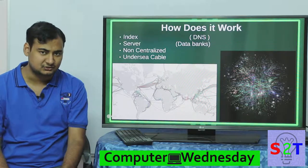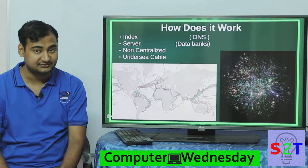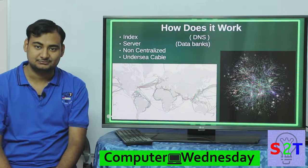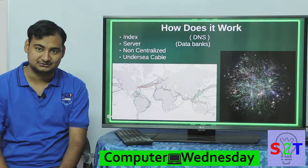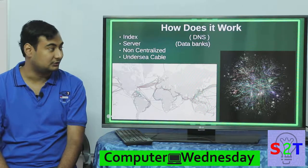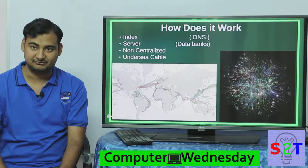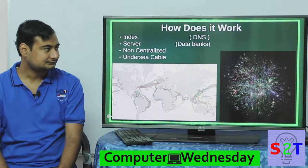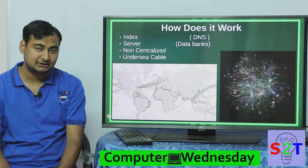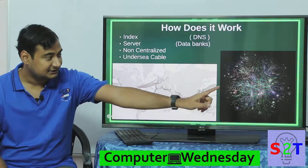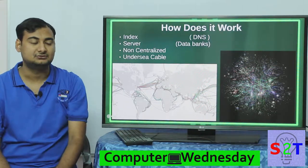After that we have the second layer, which is the server. Servers can be thought of as a data bank — they store all the data. That's why the internet doesn't go down if the person you're talking to stops their computer, because email is stored in the servers when the recipient is not online at the moment.